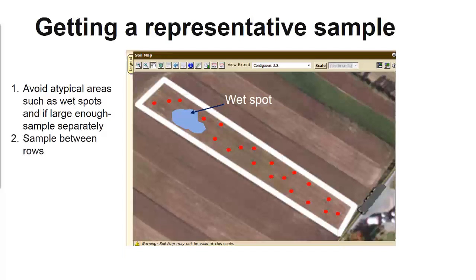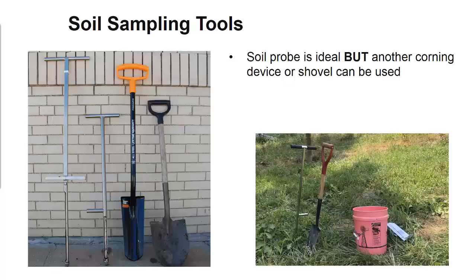And lastly, sample between rows. To take samples, a soil probe is ideal because it takes an equal amount of soil from all depths. If you are using something like a spade shovel, don't use all of the soil collected from the shovel. Because of the shape, you're taking more soil from shallow depths and the lower depths will be underrepresented. Instead, take a small portion or slice of the soil from the shovel that will represent all depths equally.